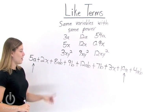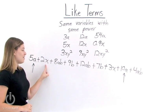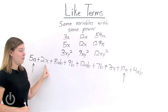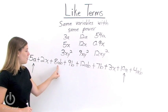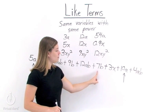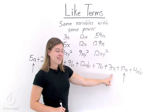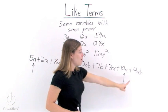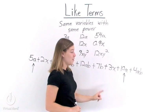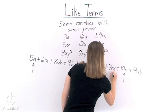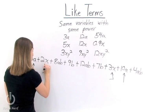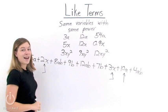Now let's look at 2x. We need x raised to the first power. Looking through the expression, we find 3x. 3x and 2x are like terms. 4ab is not a like term for 2x.